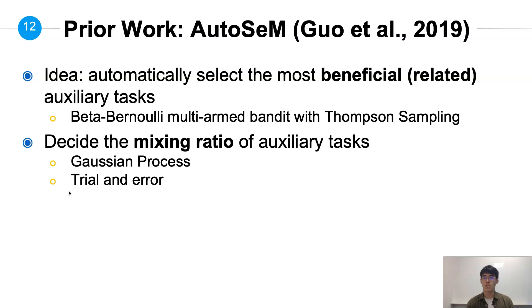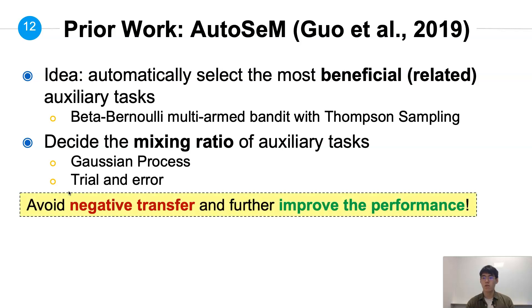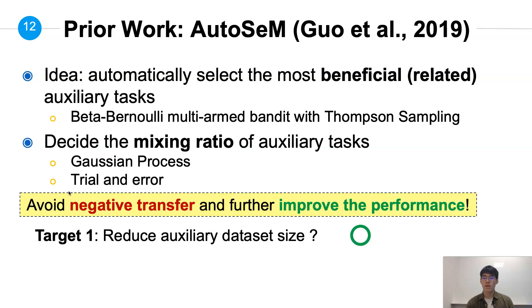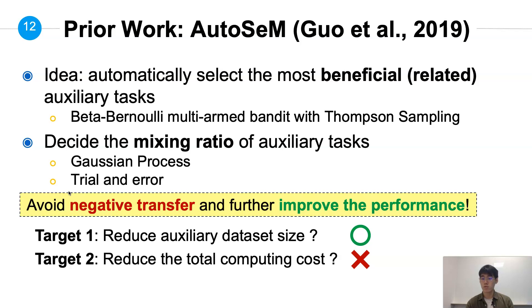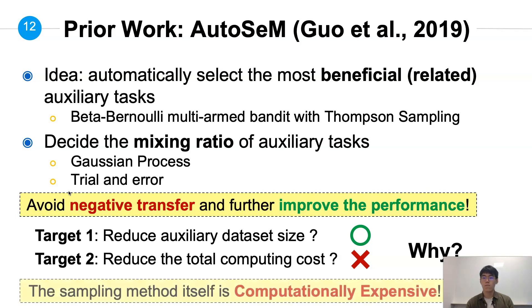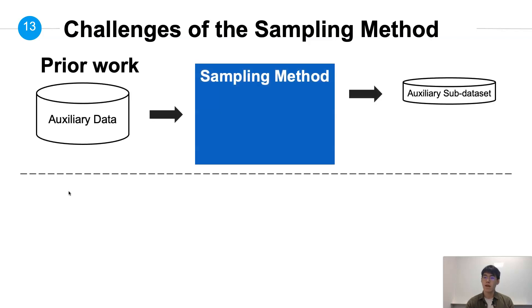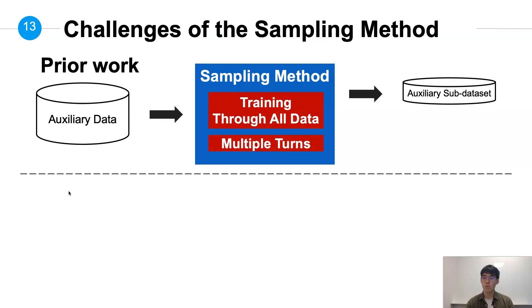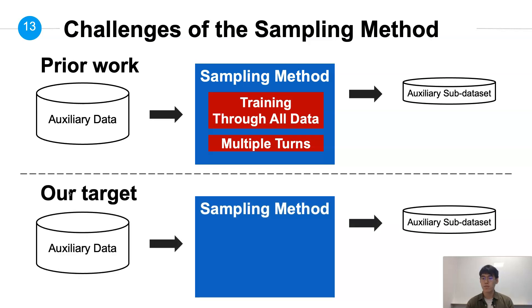A prior work proposed a method to automatically decide the mixing ratio of all auxiliary tasks. This method can successfully avoid negative transfer and improve performance, and can reduce auxiliary data size. However, it cannot reduce the computing cost, because the sampling method itself is computationally expensive. In the prior work, they need to train through all the data multiple times to decide the mixing ratio of auxiliary tasks, which costs more time than directly training on all of the auxiliary data. Therefore, our target sampling method is limited to running through all the auxiliary data only a constant number of times in a single pass.